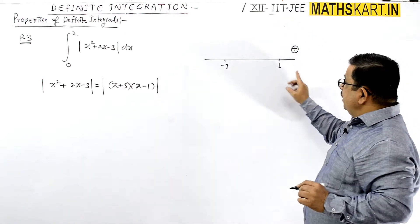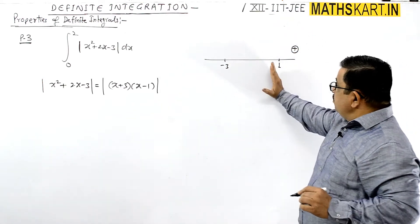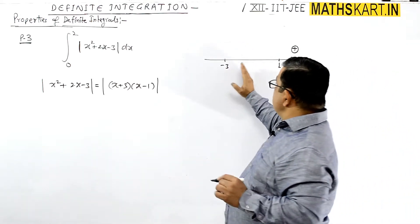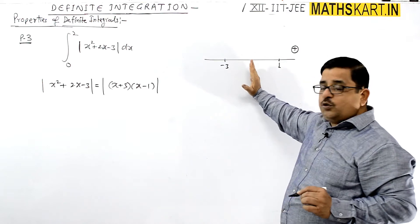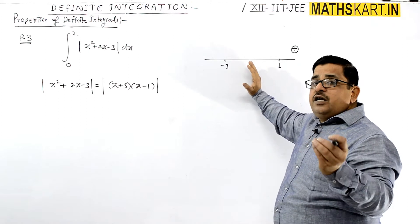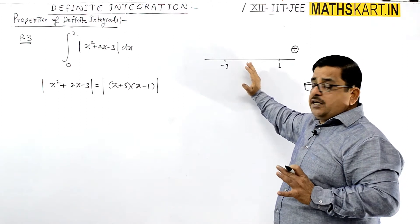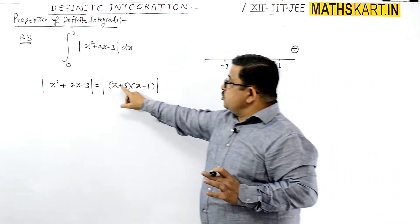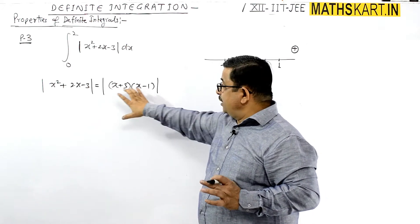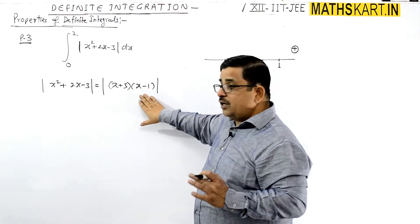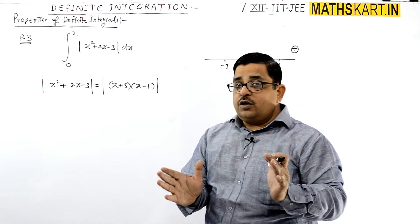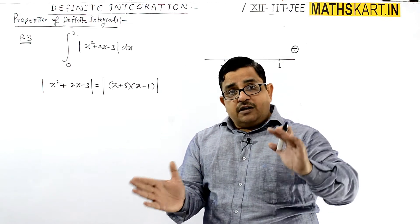And when we look at the interval -3 to 1, suppose we test x = 0: (0 + 3) is positive and (0 - 1) is negative. So ultimately here the value will be negative. So if it is making a negative value inside the modulus, then it will open negative.